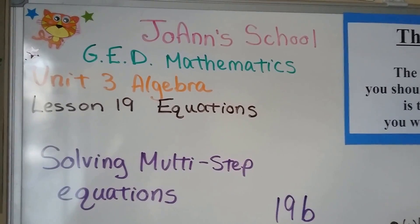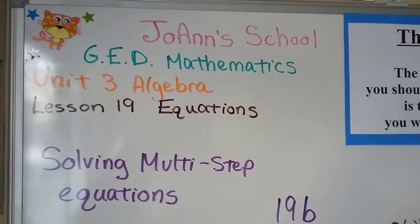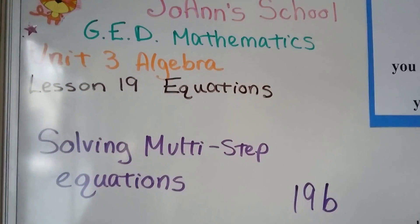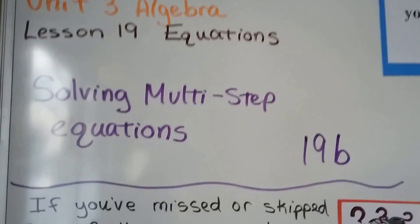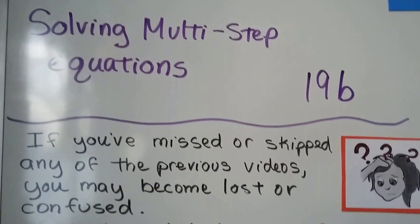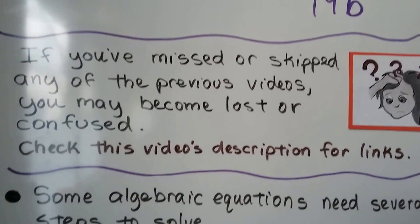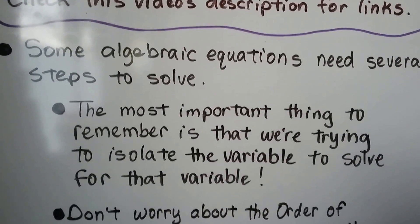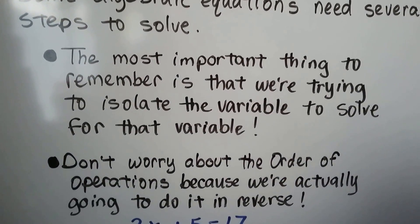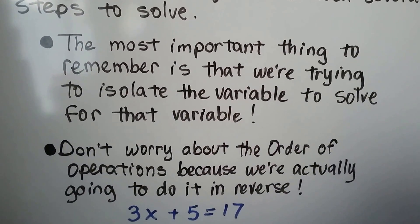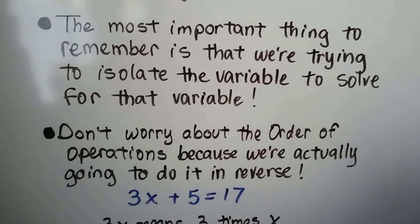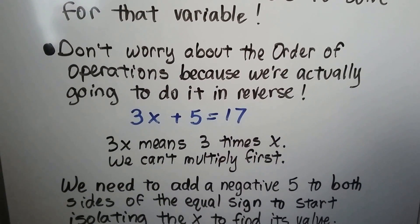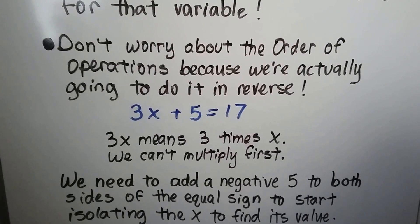In the last video we solved a one-step equation. Now we're solving multi-step equations. This is 19b. There's a link to 19a in the description if you missed it. Some algebraic equations need several steps to solve. The most important thing to remember is that we're trying to isolate the variable. Don't worry about the order of operations because we're actually going to do it in reverse.